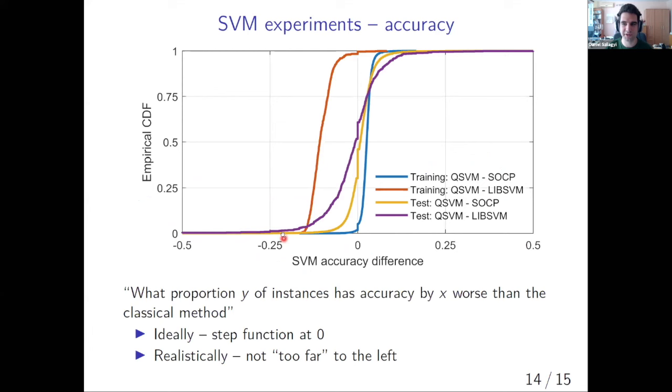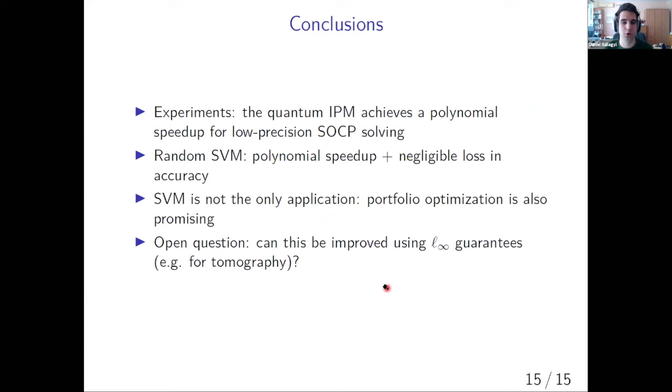Here you see the effects of having this low precision, the effects of only solving our SOCP to a low precision. These graphs show the distribution of the difference between the accuracy of the quantum SVMs and the classical methods. Ideally, we would want to have a delta function here. Realistically, we can only hope for these graphs to not be too far to the left. And that is indeed the case. For the majority of instances, depending on what exactly you compare, the difference in the accuracy between the quantum algorithm and the exact classical algorithms is not too high.